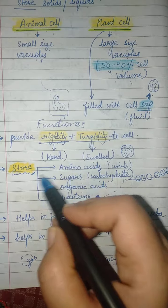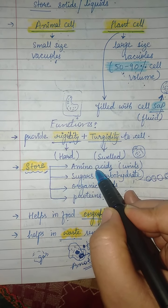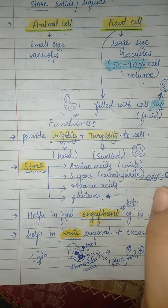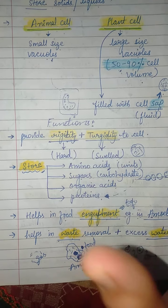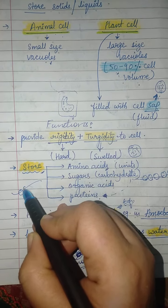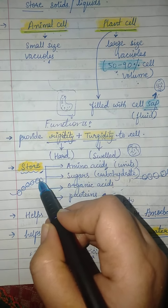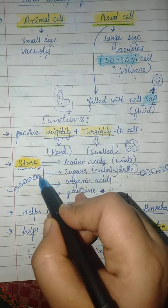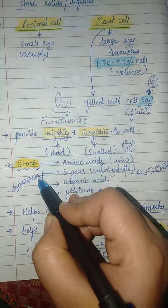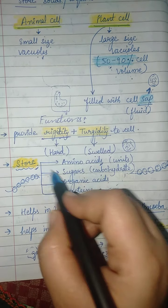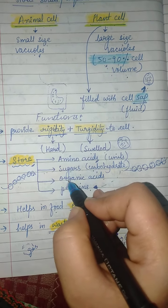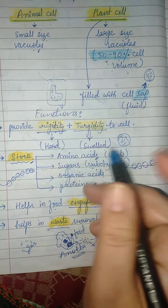Another function is the storage of amino acids. Amino acids are small units that make proteins. Vacuoles also store sugars — for example, carbohydrates.